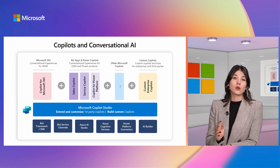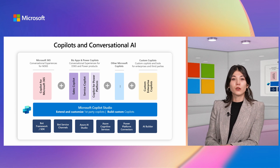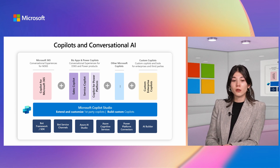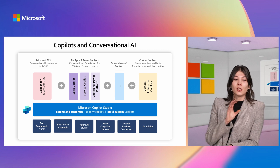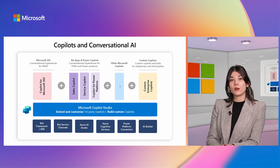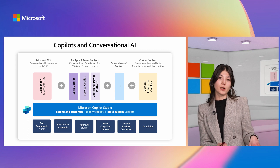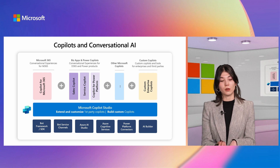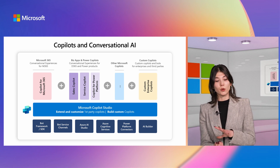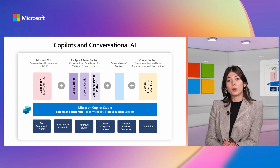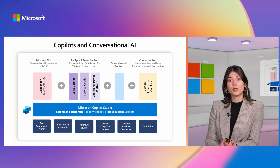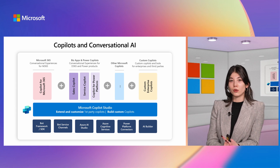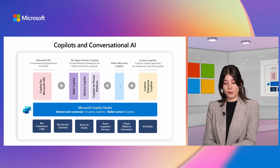You can also include copilots built custom from third-party tools or built with Copilot Studio. The middle layer is Copilot Studio, which lets you either extend or customize those first-party copilots, or build your own custom ones. The bottom layer contains further capabilities you can push into Copilot Studio, such as Azure Cognitive Services including speech-to-text, or AI Builder models to leverage additional AI capabilities.